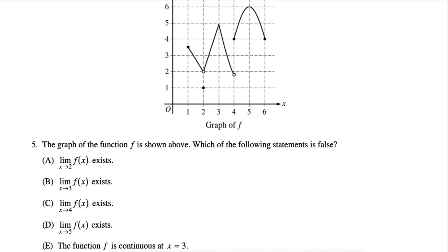For a limit to exist, in order for a limit of a number to exist like x approaches 2, the left side and the right side need to agree on the same y value. So for example, for A, it